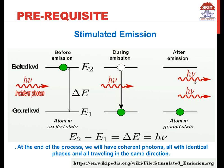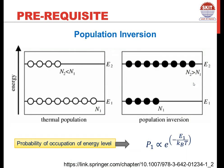Now if this process is repeated we would be having many photons and the coherency would be maintained. Now let us move further and start with population inversion.